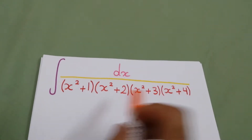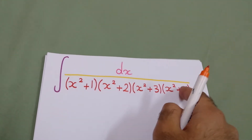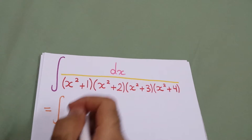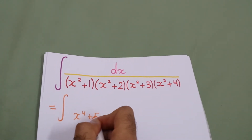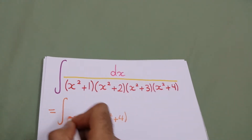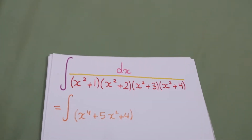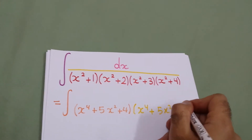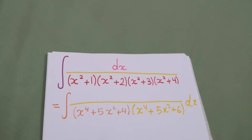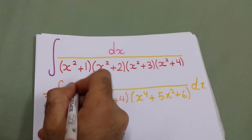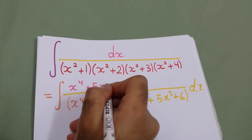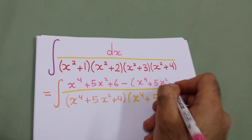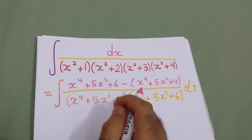Because 1 plus 4 equals 2 plus 3, we will multiply this by this and this by this. The integral will equal the integral of when we multiply these two brackets: x to the power 4 plus 5x squared plus 4, and the second two brackets become x to the power 4 plus 5x squared plus 6. In the numerator we write it as x to the power 4 plus 5x squared plus 6 minus x to the power 4 plus 5x squared plus 4.